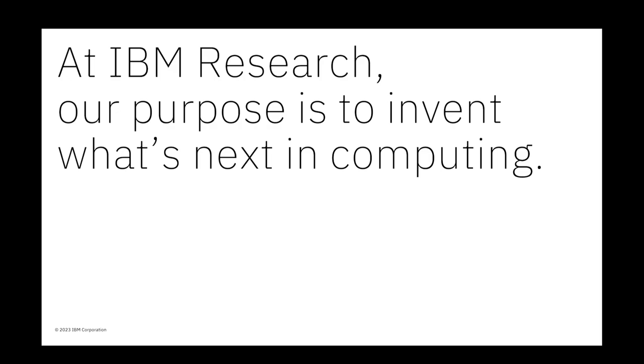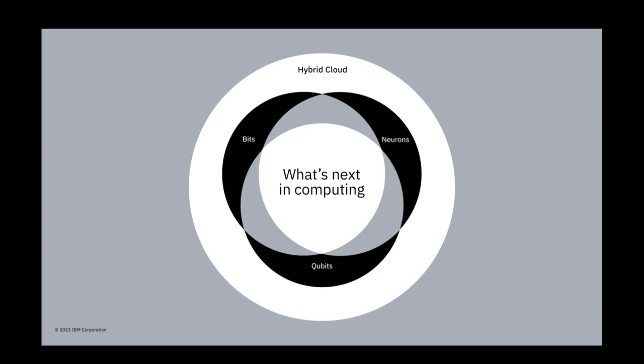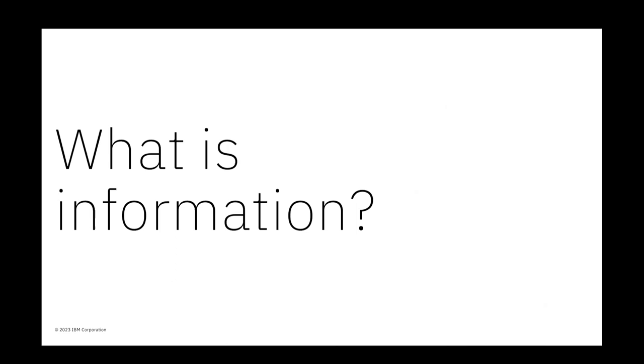This community comes together for the purpose of always imagining what's next in the world of computing. If I were to summarize very simply what is going on in the world of computing, I would say it is bits plus neurons plus qubits coming together in a hybrid architecture. To understand the implications of quantum computing, it is very useful to actually ask ourselves the question: what is the nature of information? What is information and how do we define it?